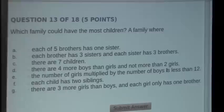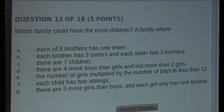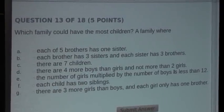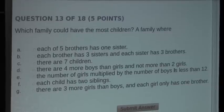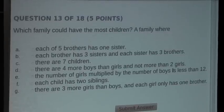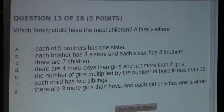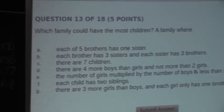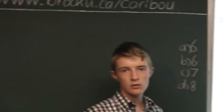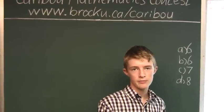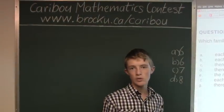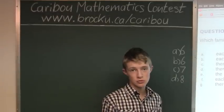So now E. The number of girls multiplied by the number of boys is less than twelve. So the product would have to be, the product of the boys and the girls would have to be eleven or less. So let's use eleven as an example. So let's say for an example there would be one boy and eleven girls. So one times eleven, which means there would be twelve children.